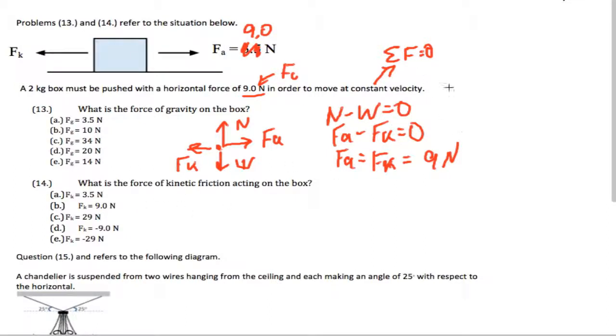They want us to know the force of gravity on the box. Well, the force of gravity, we're going to use the other equation. So normal equals weight, which equals 2 times 9.8, which is going to give me 19.6 Newtons.